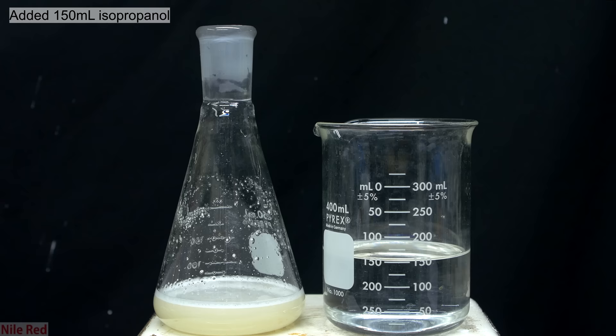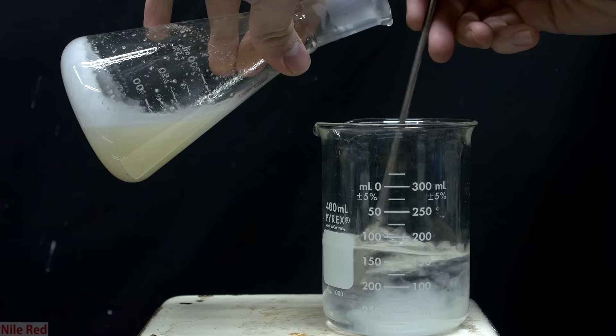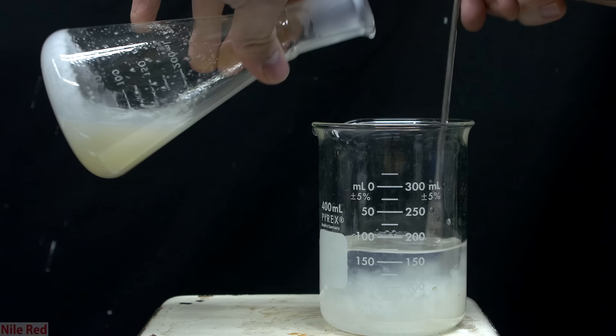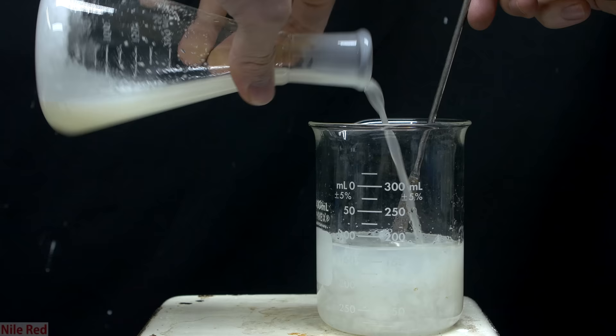I then take my calcium acetate solution, and I slowly pour it into the alcohol. You can see that the moment it touches the alcohol, it immediately turns to the jelly that we want. It's really not necessary to add all of the calcium acetate, and what we should do here is add a little bit at a time, stir, and keep doing this until we get to the consistency that we want.